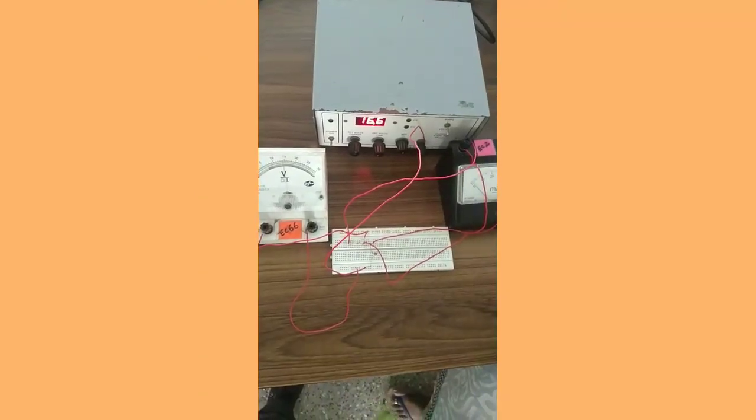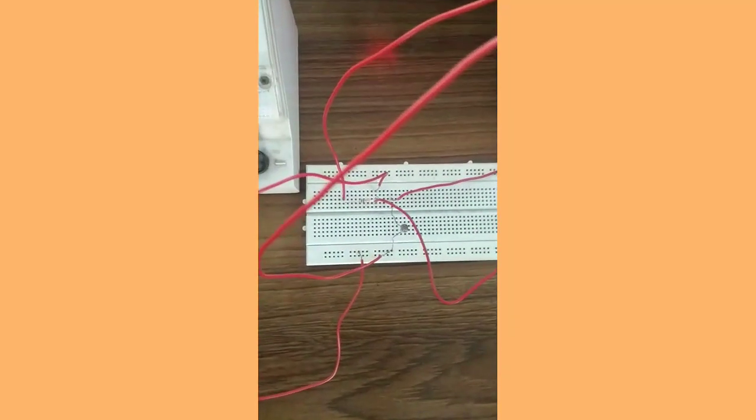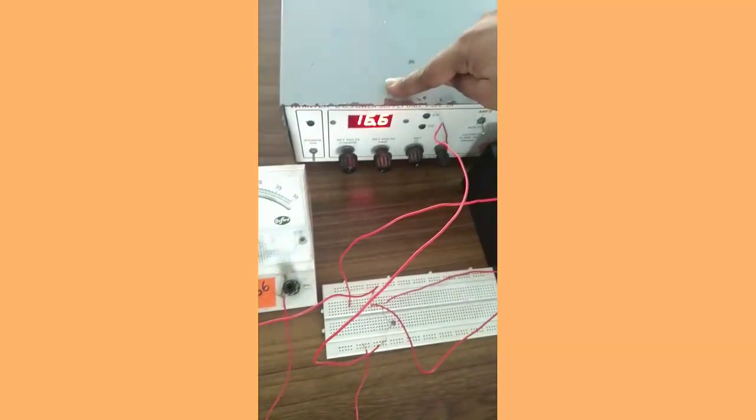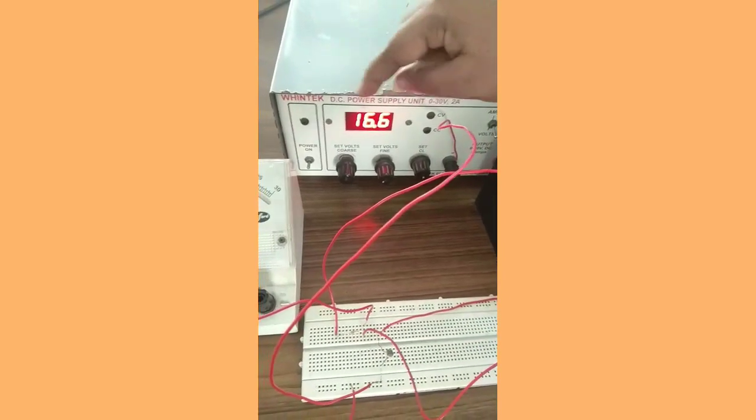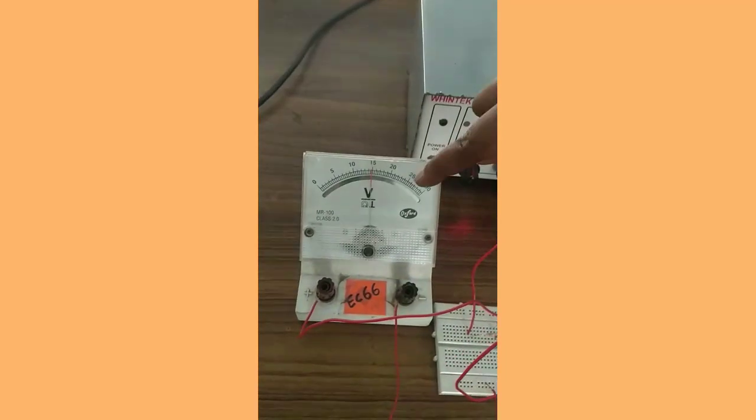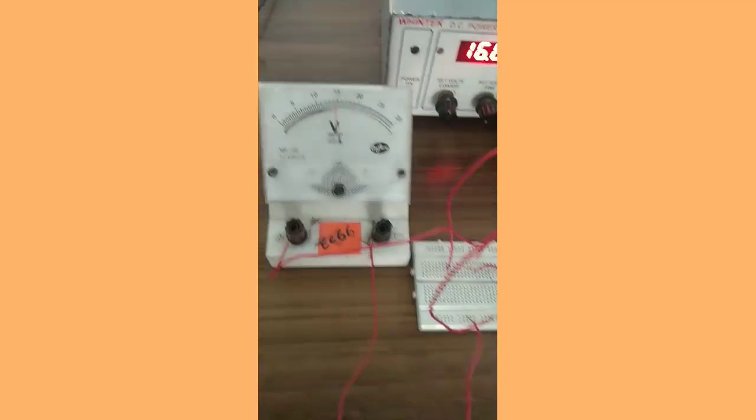Connect the circuit as per the circuit diagram. Now, using the RPSU, set a constant voltage of about 15 volts. By varying this RPSU, you can set the voltage to about 15 volts on the voltmeter.